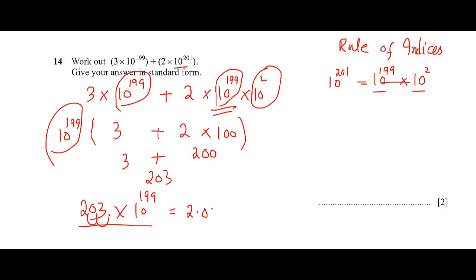It is 2.03. So we have shifted this decimal towards the left hand side, so we will raise power plus 2. 199 plus 2, because this is 2 steps. So the answer is 2.03 times 10 to the power 201.